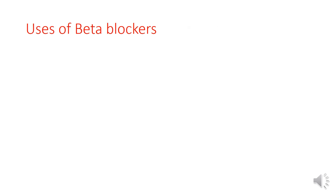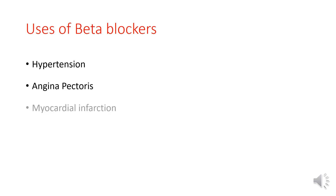Now we will see the uses of beta blockers. They are used in the treatment of hypertension, angina pectoris, myocardial infarction, and congestive heart failure. So this is all about beta blockers. Thank you.